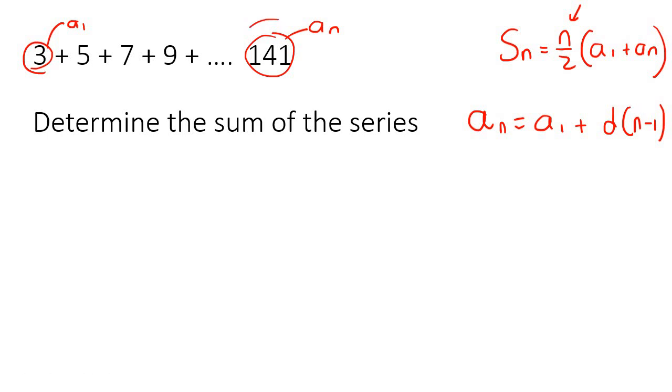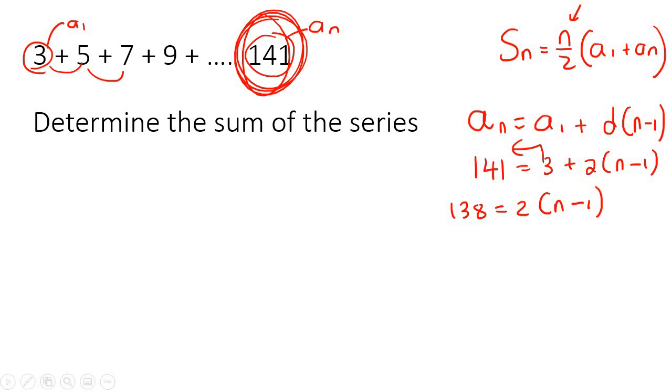What we'll do is we'll take this last term, and we know that that one's 141, so we'll plug that in there. We know that A1 is 3. We know that the difference between the numbers is 2, and then the only unknown is n. So if we can go calculate n, let's first take this 3 to the left, so it'll become 138, because we're going to say 141 take away 3, and then we're left with this.